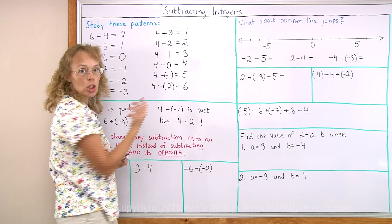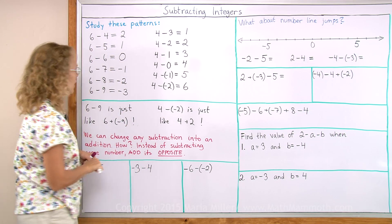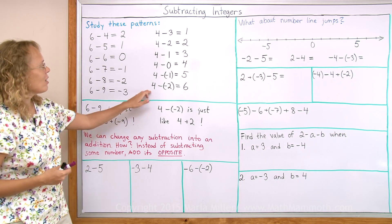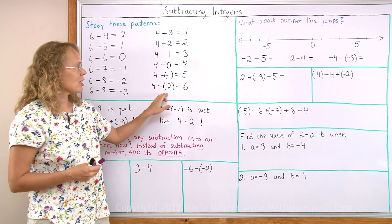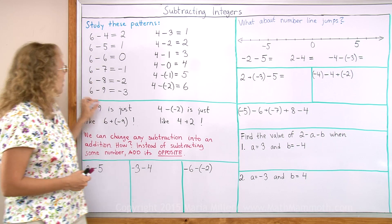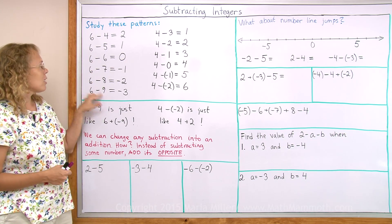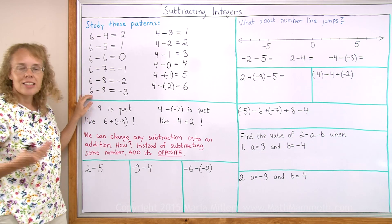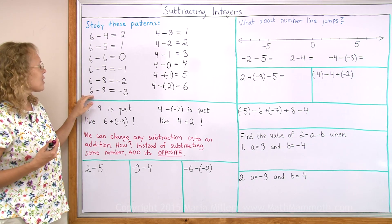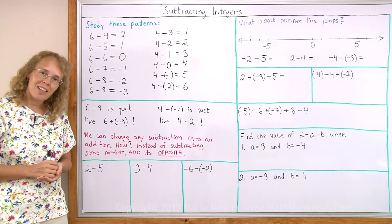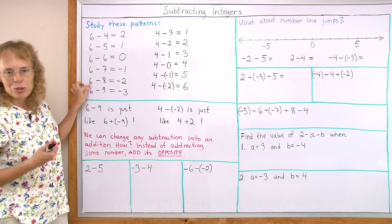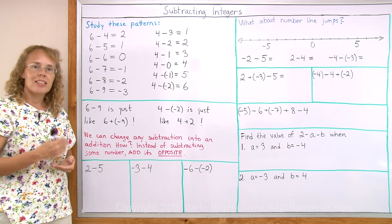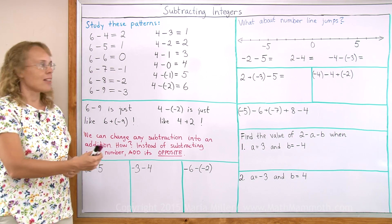It is like 4 plus 2. And that is exactly what I want you to notice — that 4 minus negative 2 is like 4 plus 2. And this one here, 6 minus 9, or 6 minus 8, those are actually the same things as 6 plus negative 9. This here, 6 minus 8, is actually the same as 6 plus negative 8.